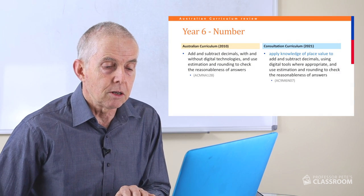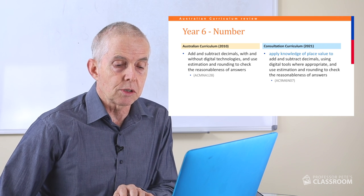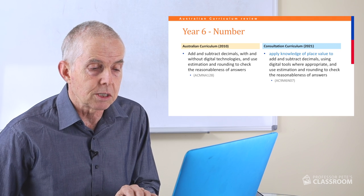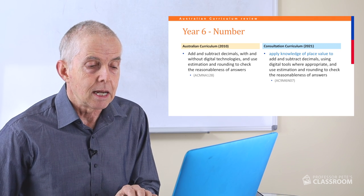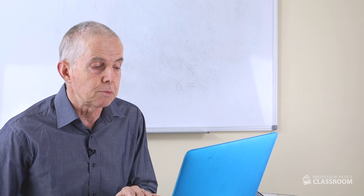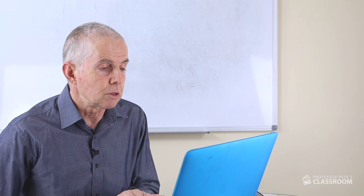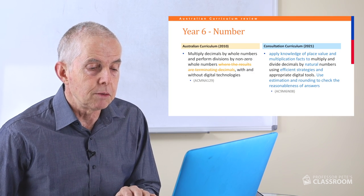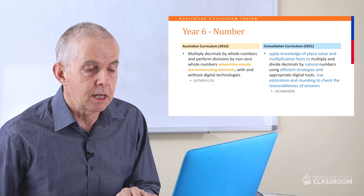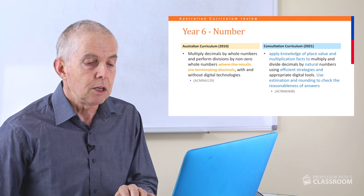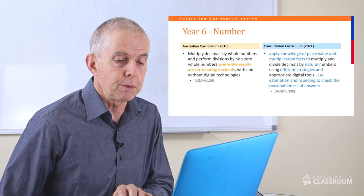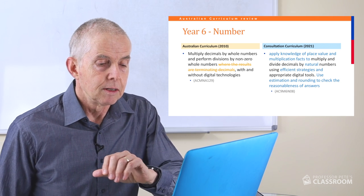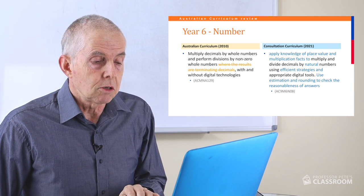Number seven: apply knowledge of place value to add and subtract decimals using digital tools where appropriate; use estimation and rounding to check the reasonableness of answers. Hardly anything has changed but it mentions place value, which is important. Number eight: apply knowledge of place value and multiplication facts to multiply and divide decimals by natural numbers, using efficient strategies and appropriate digital tools; use estimation and rounding to check the reasonableness of answers. This is a worthwhile revision of this content descriptor.